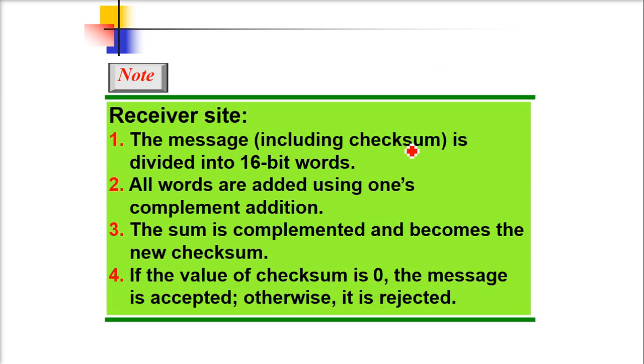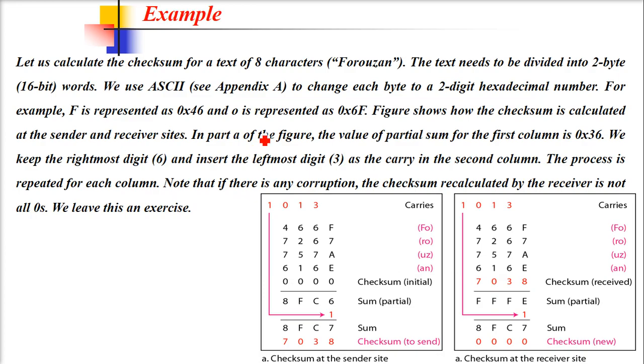At the receiver side, the message including the checksum is divided into 16-bit words. All words are added using one's complement addition. The sum is complemented and becomes the new checksum. If the checksum is 0, the message is accepted. Otherwise, it is rejected. The difference from the previous discussion is that we're using 16-bit words.